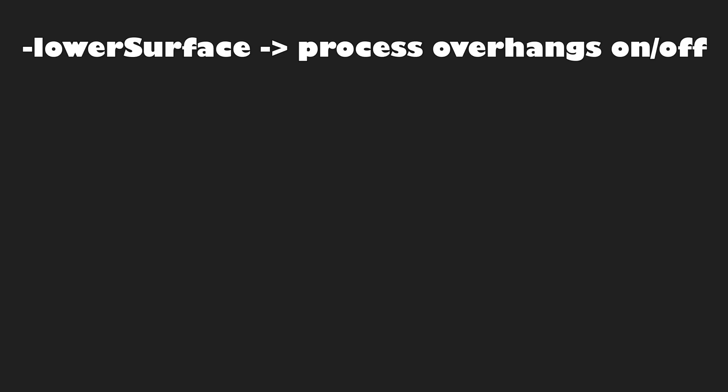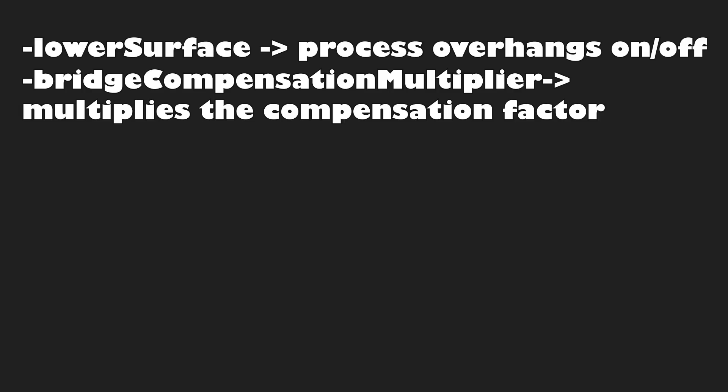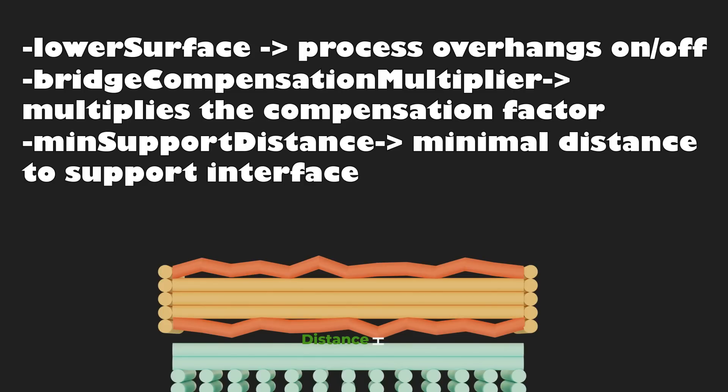-LowerSurface followed by 1 or 0 turns Fuzzy Skin off or on for the overhang layers. -BridgeCompensationMultiplier followed by a number multiplies the normally calculated extrusion compensation factor by the inputted number — this helps with bonding the overhang to the next layer; I suggest using a value of at least 2. -MinSupportDistance followed by a number sets the minimal distance the Fuzzy Skin has from the support interface layer to prevent bonding to the supports.